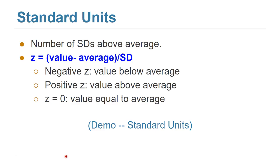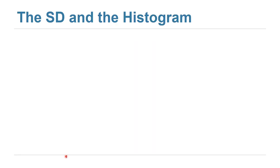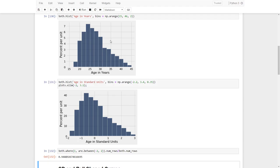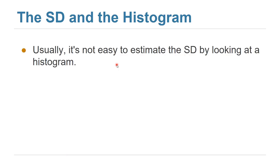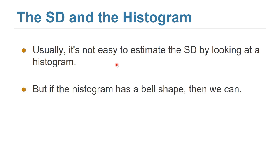Now let's talk about the relation between the standard deviation and the histogram — specifically, given a histogram, can we estimate the standard deviation? Generally, we cannot estimate it just by looking at any histogram. But in a very special case, when the histogram has a bell shape, then we can.